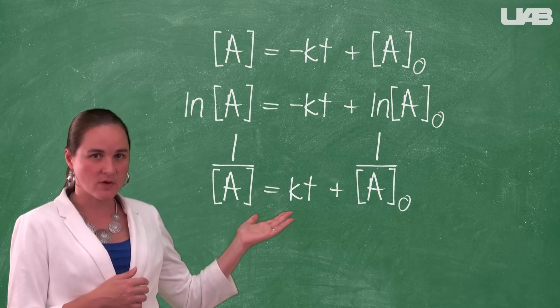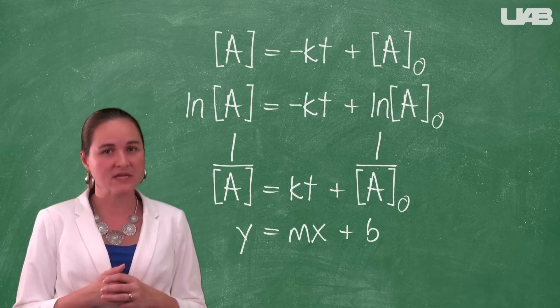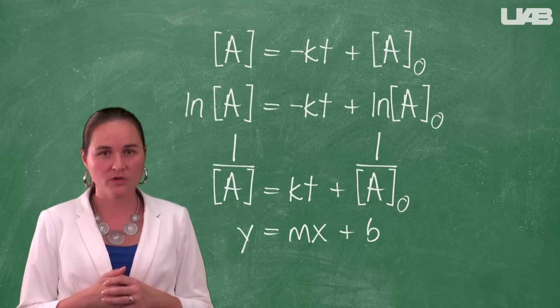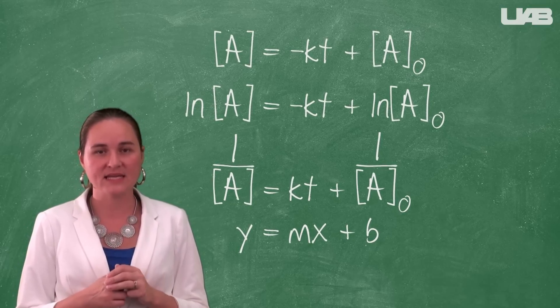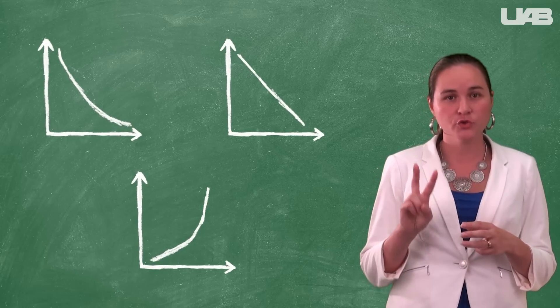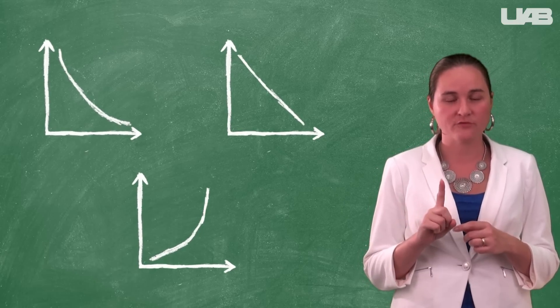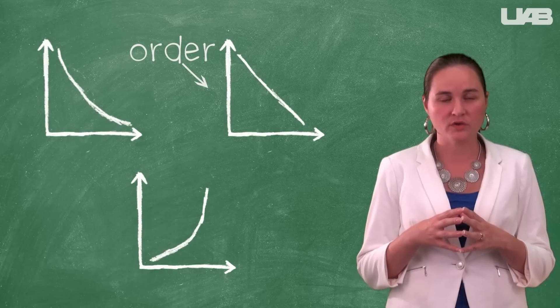Here are the integrated rate equations. They follow the equation for a line, y equals mx plus b. To find the order of a reaction, we will prepare three graphs by forcing the data into each equation. When we look at the graphs we prepared, two graphs will be curved and one graph will be linear. The linear graph corresponds to the order of the reaction.